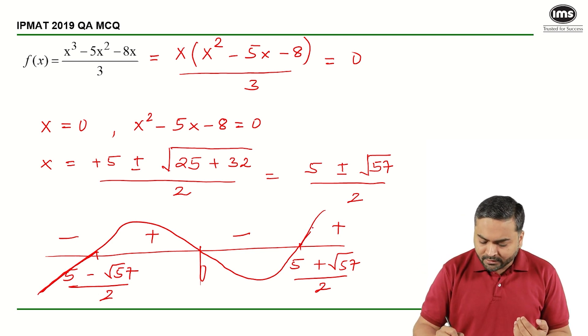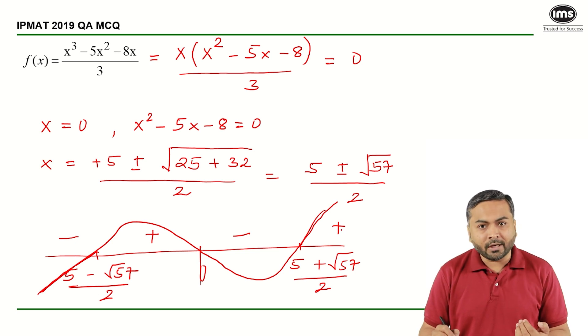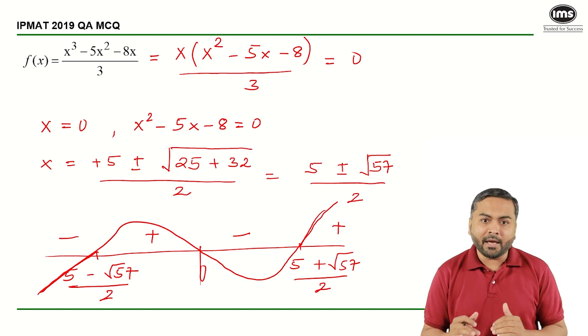However, on this side it is positive and monotonically increasing. So that is how we could have solved this question step by step.